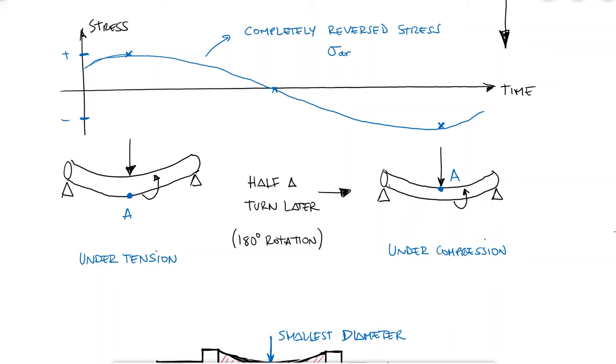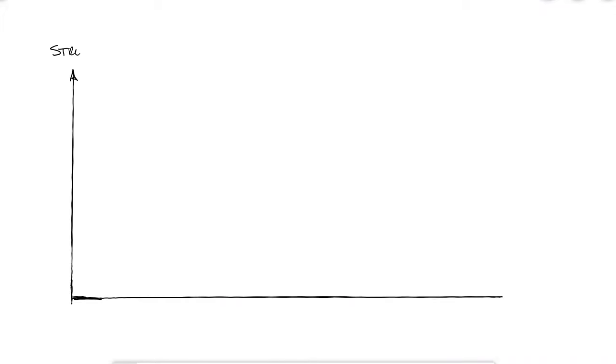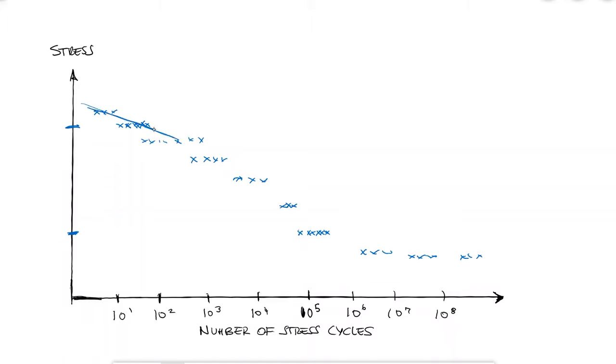If identical specimens are tested using distinct stress values until they break, we would see that the specimens that are subjected to completely reversed stresses of low magnitudes break after many cycles, while specimens subjected to completely reversed stresses of higher magnitudes break after fewer cycles. If we do this for several values of alternating stress, we develop a plot that we call the S-N diagram.